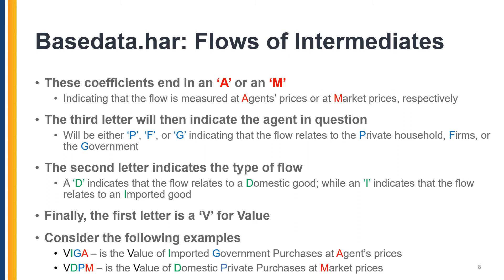Let's look at a couple of examples. Consider the coefficient VIGA: the V is for value, the I is for imported, the G is for government, and the A is for agent. VIGA is therefore the value of imported government purchases at agent prices. Similarly, VDPM is the value of domestic private purchases at market prices.